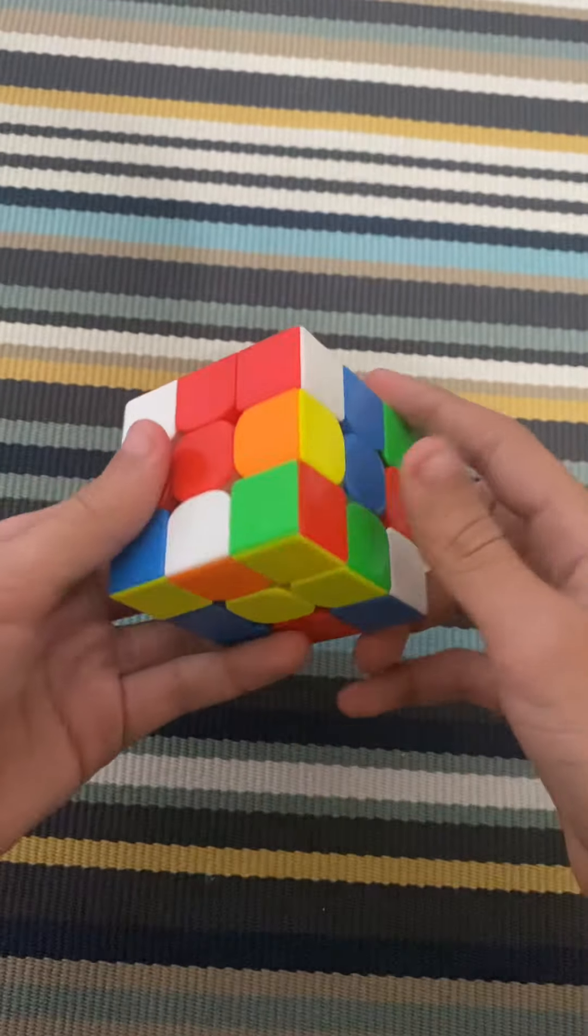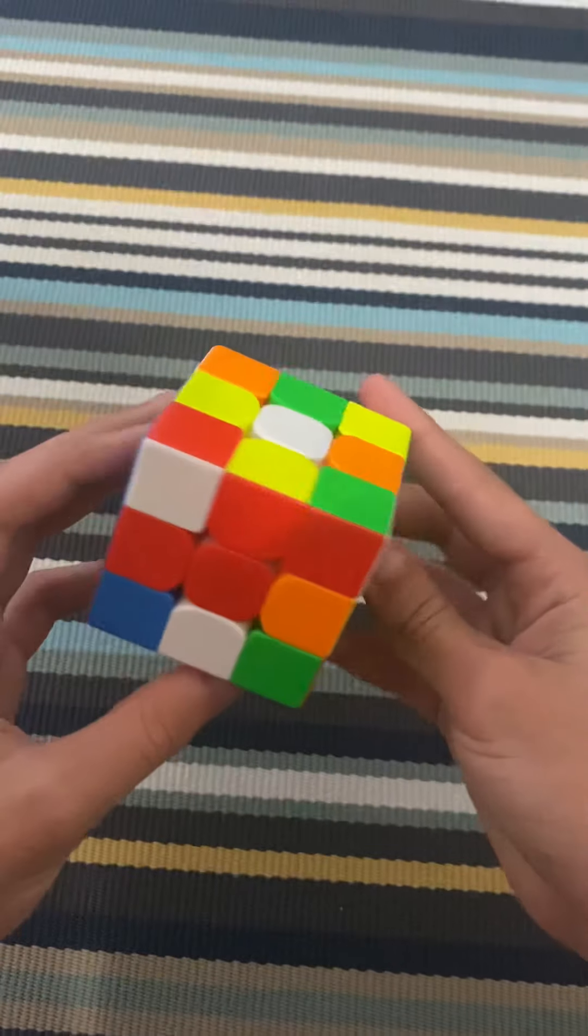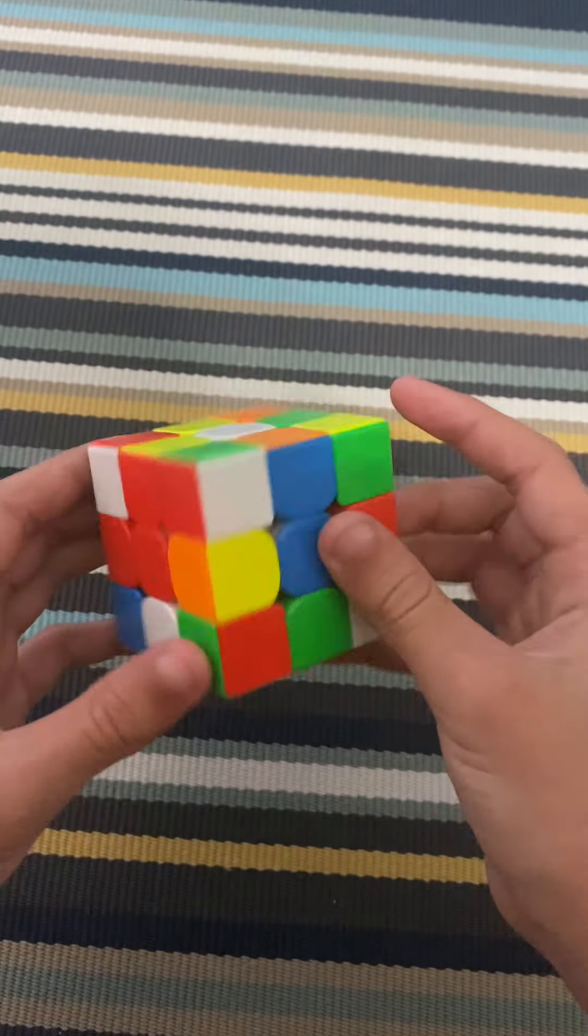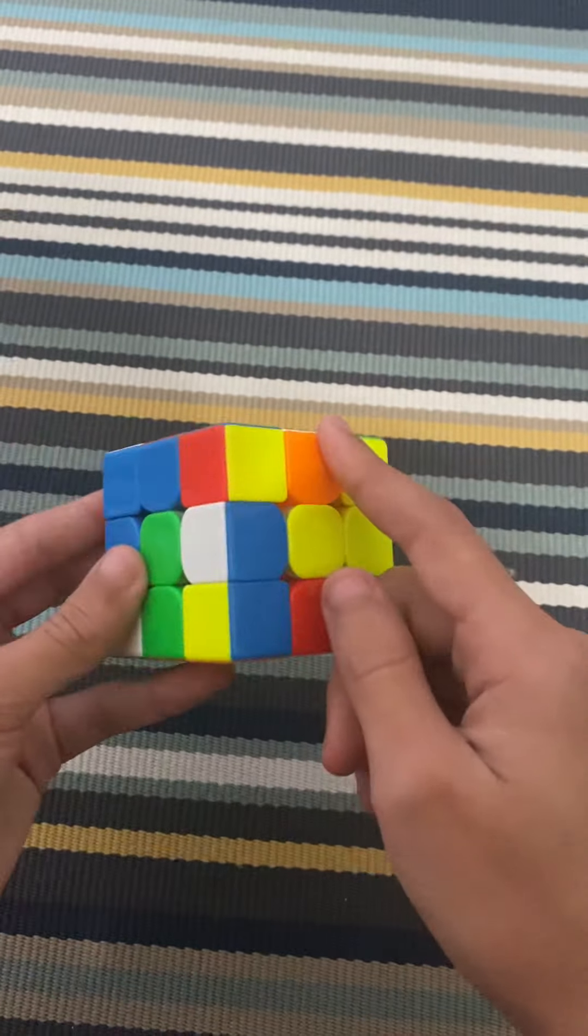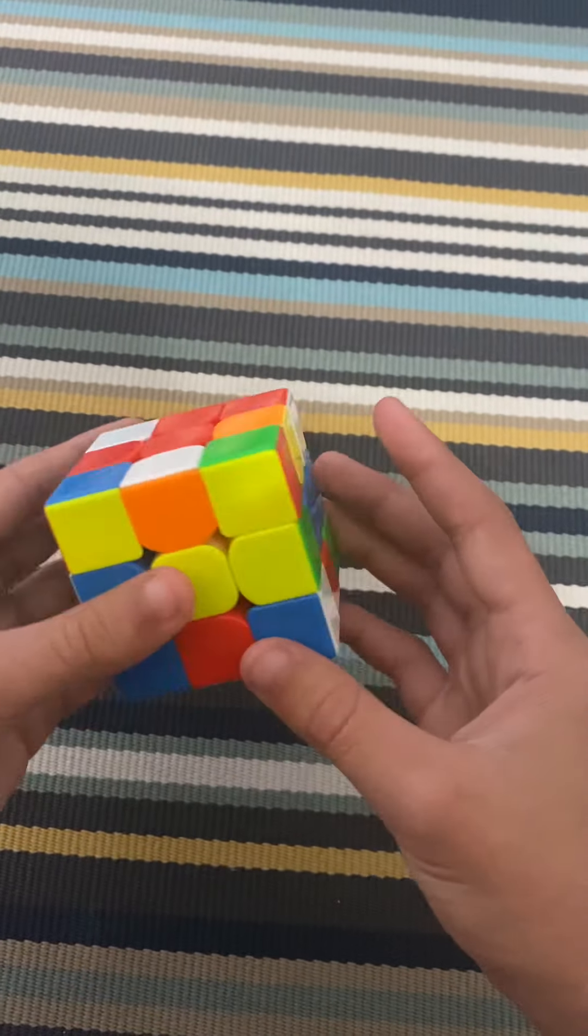I just invented a method called the 10 skin method and I'm going to be showing you how it works. The first thing you need to do is get the corner solved, the four bottom corners solved. So we have this for example.